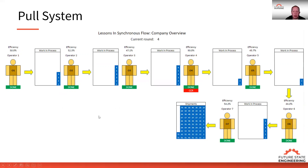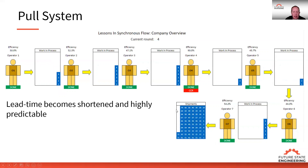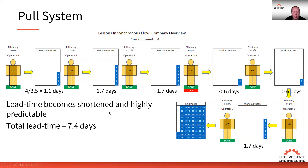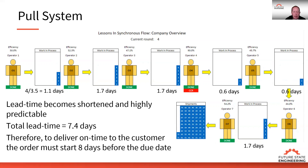Now, if we go to a pull system, we're releasing work based on the customer demand rate that's aligned with our capacity constraint resource capacity. In this system, we limit the amount of inventory in the system and we go to a standard work in process. With standard work in process, we can understand more predictably what the lead time is going to be, and the lead time is going to be much shorter. If I do the same calculation — inventory divided by the demand rate — the number of days of inventory is much less, and the total lead time in this system is 7.4 days.